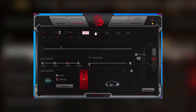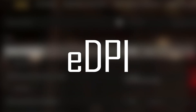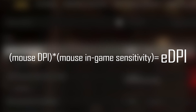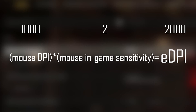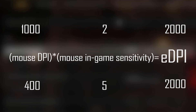Since the DPI of the mouse does not affect the operation of the macro settings, you can use the eDPI formula to solve this problem. eDPI equals the DPI of the mouse multiplied by the in-game sensitivity — that is the sensitivity you are actually playing with. For example, if your in-game sensitivity is 2 and the DPI is 1000, your eDPI will be 2000. If you change the in-game sensitivity to 5, you must set the DPI to 400 so that the eDPI value remains constant.